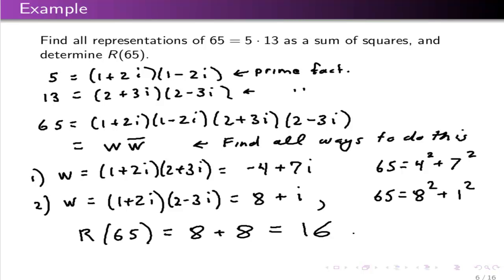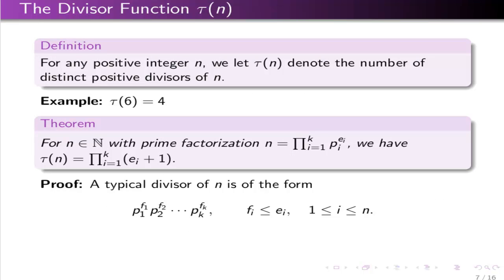That example has given us the mechanism for counting R(n) for any value of n. To do this, we introduce the divisor function τ(n). For any positive integer n, τ(n) denotes the number of distinct positive divisors of n. For example, τ(6) = 4 since the divisors of 6 are 1, 2, 3, and 6. There's a nice formula: if n has prime factorization ∏ pᵢ^eᵢ, then τ(n) = ∏(eᵢ + 1).